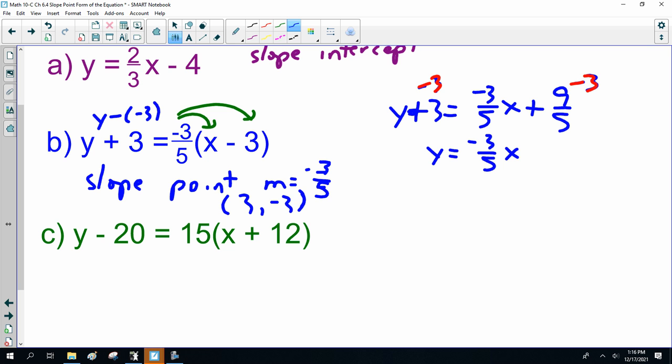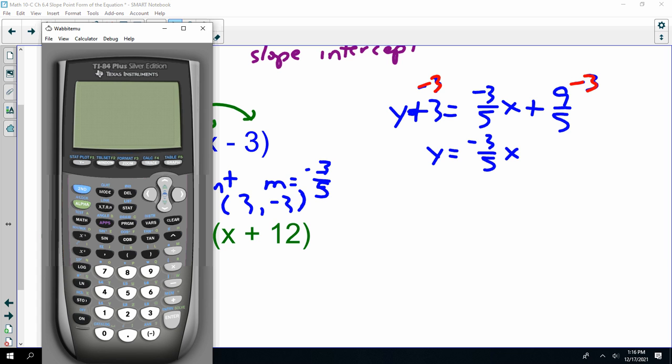So, this is y equals minus 3/5 x. Now, 9/5... I can't do that in my head anymore. I hate this getting old. That is minus 1.2.